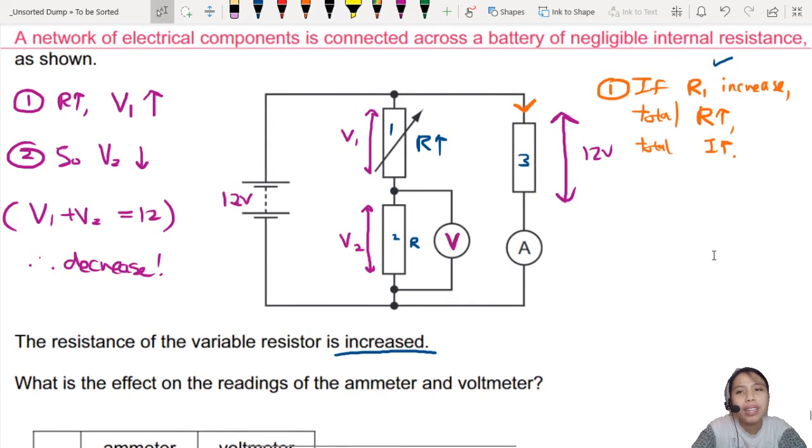Let's go back to our steps of reasoning here. Look carefully. If R increase, total R increase. That's correct. Total current will increase. That's correct. But...